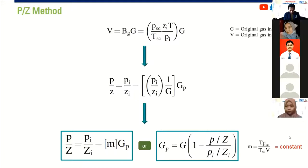P divided by Z equals to PI over ZI minus M, which is M is a constant, times GP. Also, we can change it to this form. After obtaining this formula, we can construct the very important chart for reservoir engineers, which is P over Z analysis.